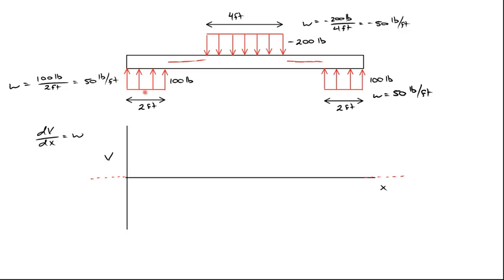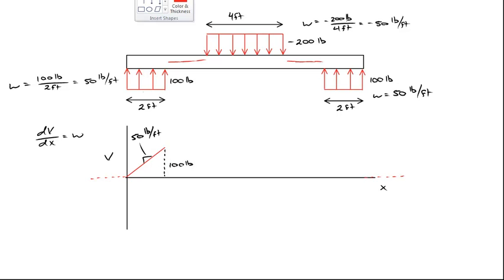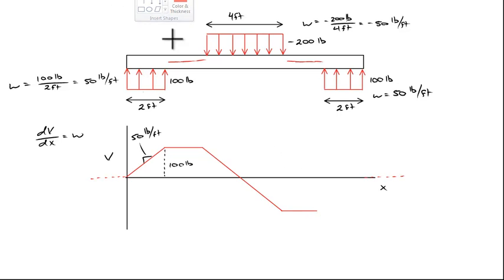So whatever we draw for v as a function of x should have a positive constant slope, followed by a zero slope, followed by a negative constant slope, followed by a zero slope, and then a positive slope again. Something that has a constant slope is linear, so let's draw a line over the first segment. Our slope here is equal to 50 pounds per foot, and with this slope we come up to a value of 100 pounds for the shear force. Then we proceed to the right with zero slope, then a slope of negative 200 pounds per foot, followed by zero slope again.